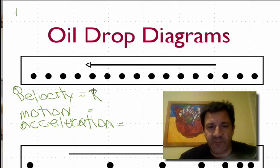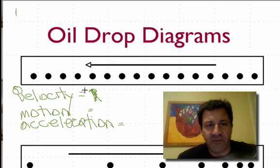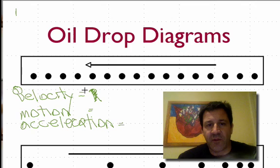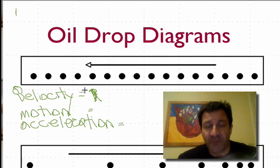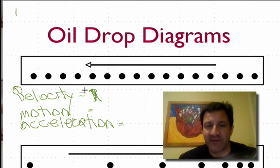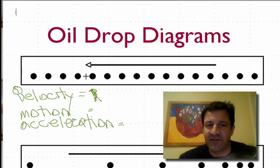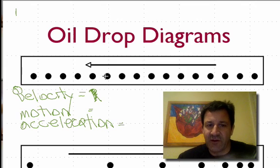I made this quick video to go over the oil drop diagrams that you might see in the Minds on Physics assignment we're working on in class. The idea is there's something — most likely a car — just dripping oil consistently, with the same time interval between each drop. Just think of it as one second between each drop.